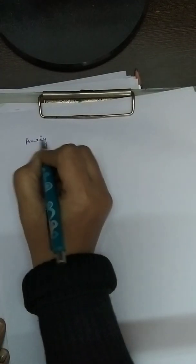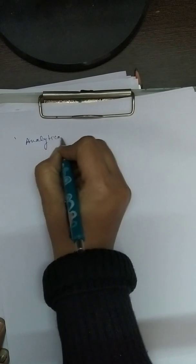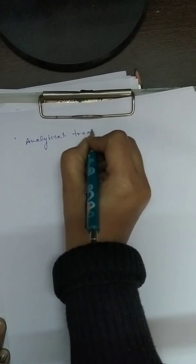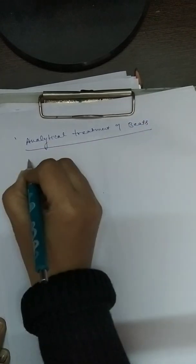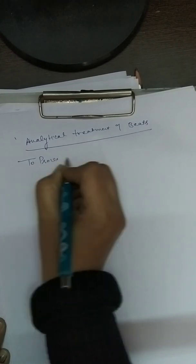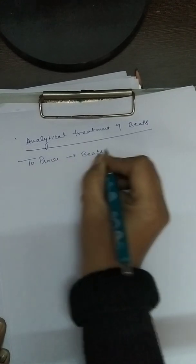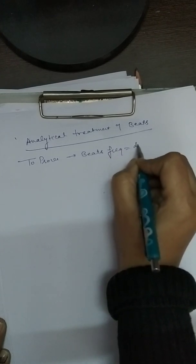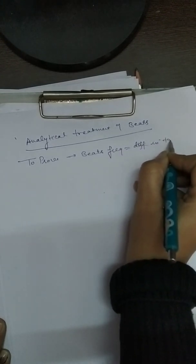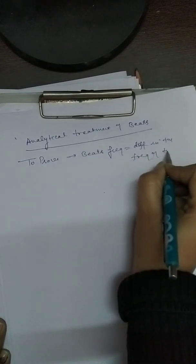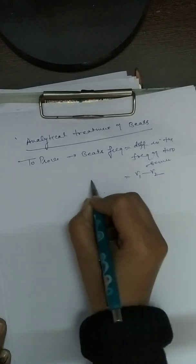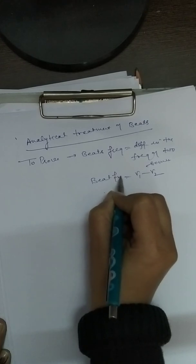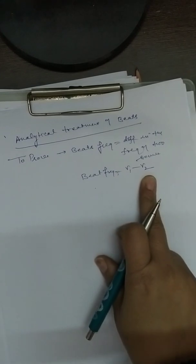Analytical treatment of beats — very important. We want to prove that beat frequency is the difference in the frequency of two sources, that is ν1 minus ν2. This is the beat frequency. If ν1 is the frequency of the first source and ν2 is the frequency of the second source, then the beat frequency is the difference in their frequencies.